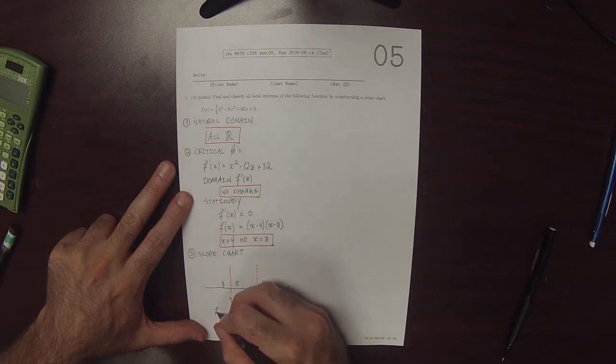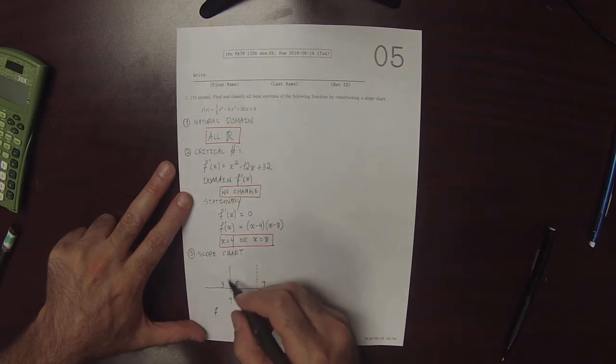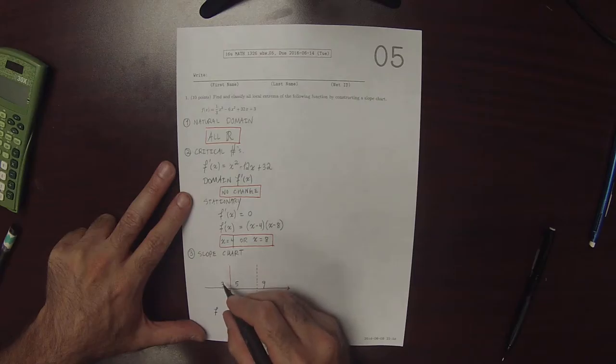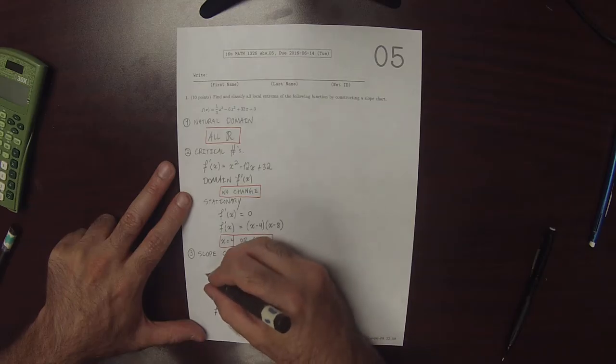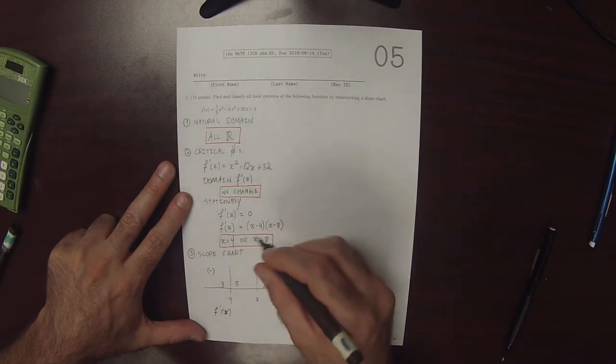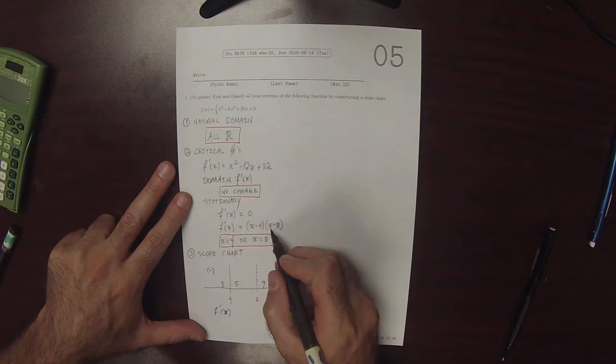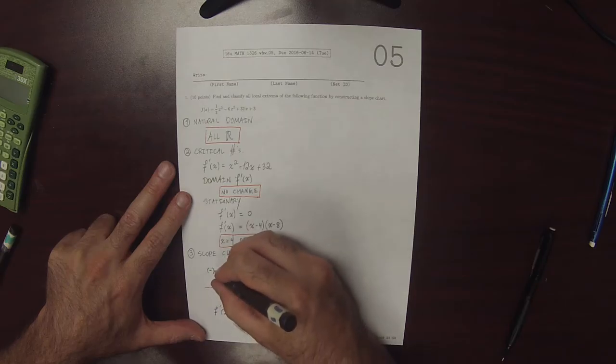So the derivative evaluated at 3. So we're going to evaluate the derivative at each one of these points. So at 3, I can see that it's negative. 3 minus 4 is negative, and then 3 minus 8 is again negative.